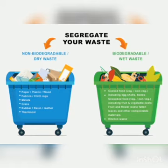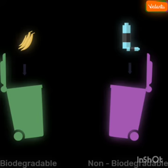Biodegradable wastage is that wastage which can decay — the wastage which can rot is known as biodegradable wastage. While the wastage which cannot decay is known as non-biodegradable wastage — it is wastage which lasts for a long time.